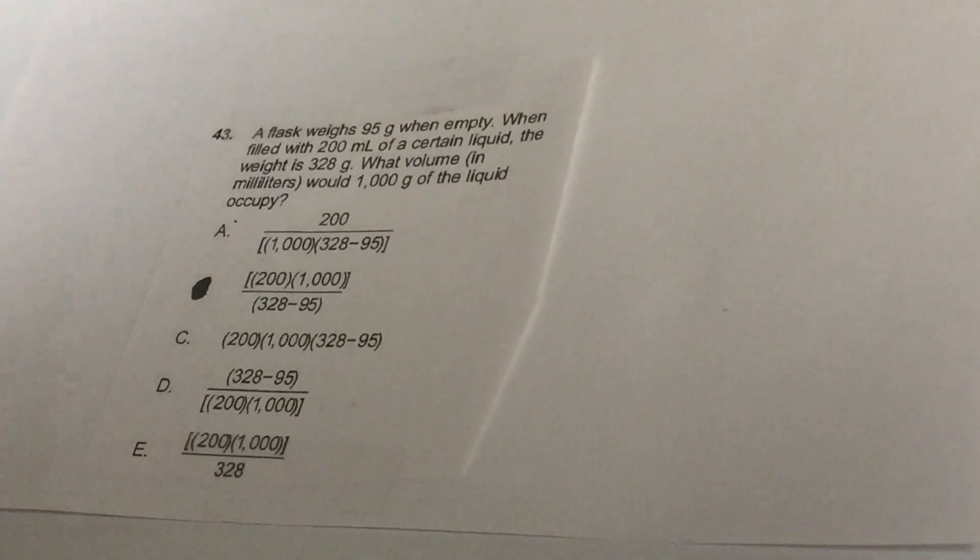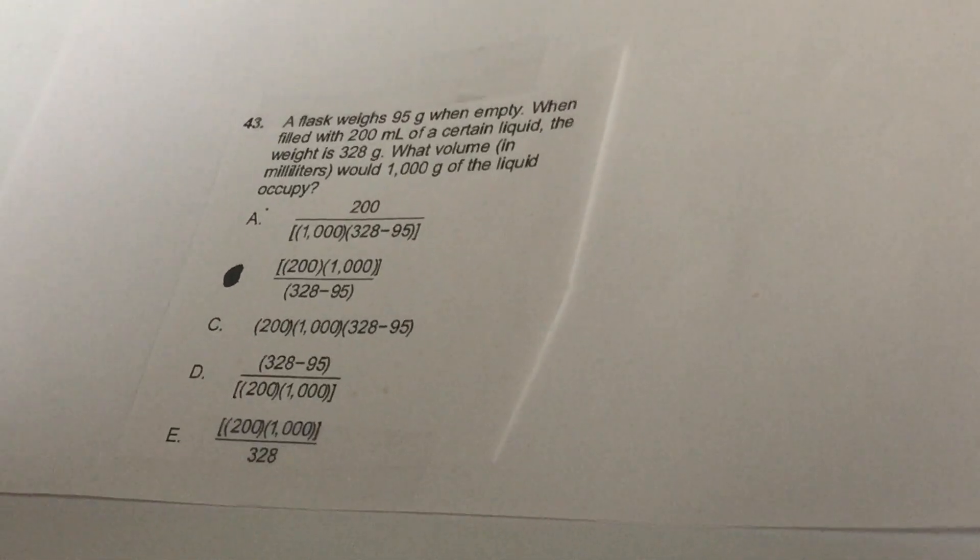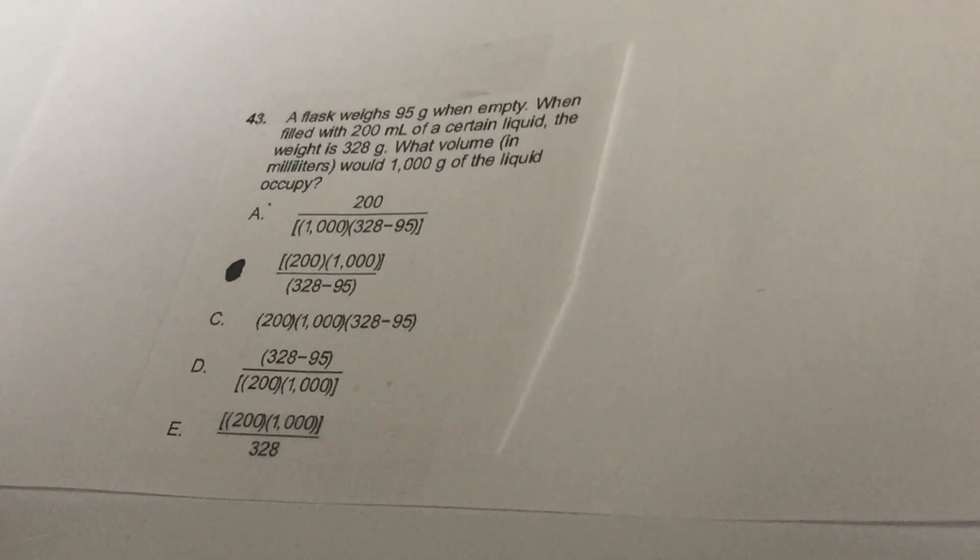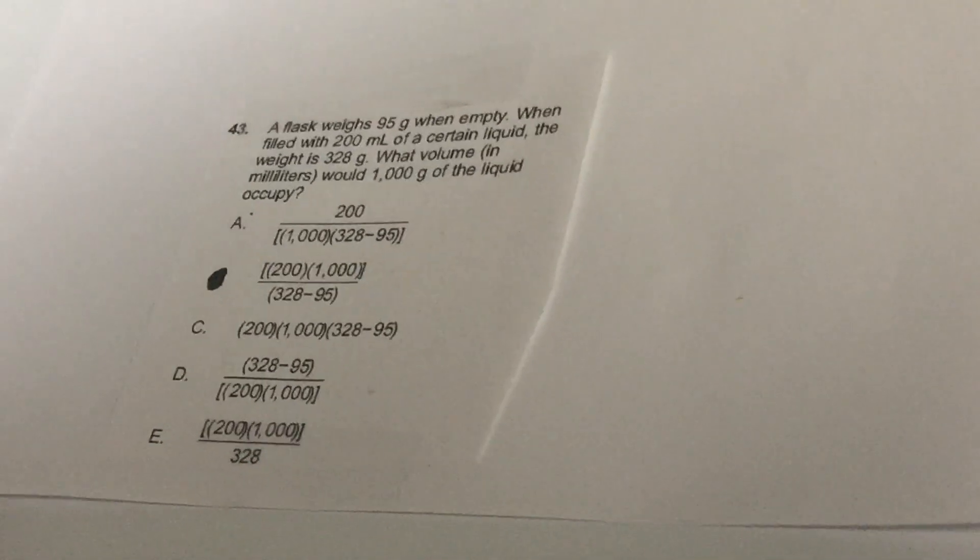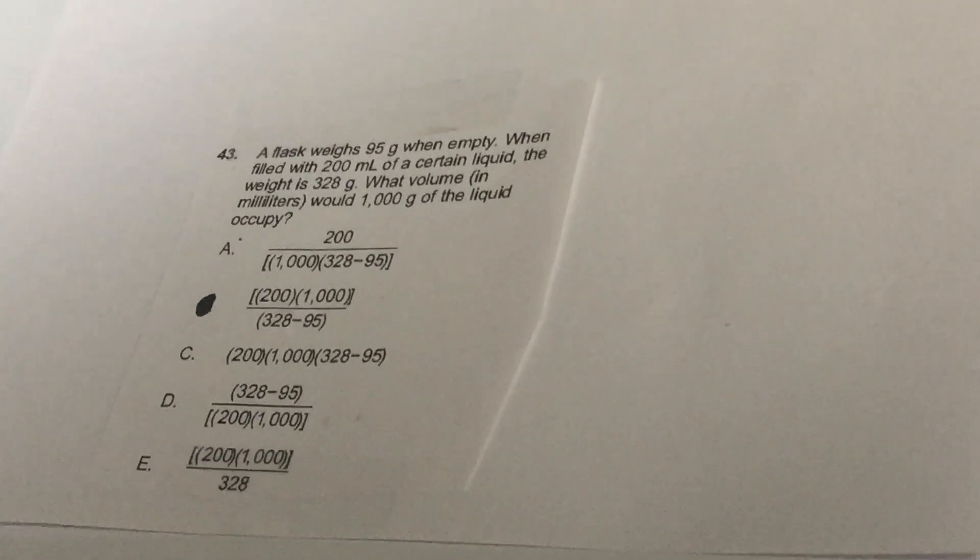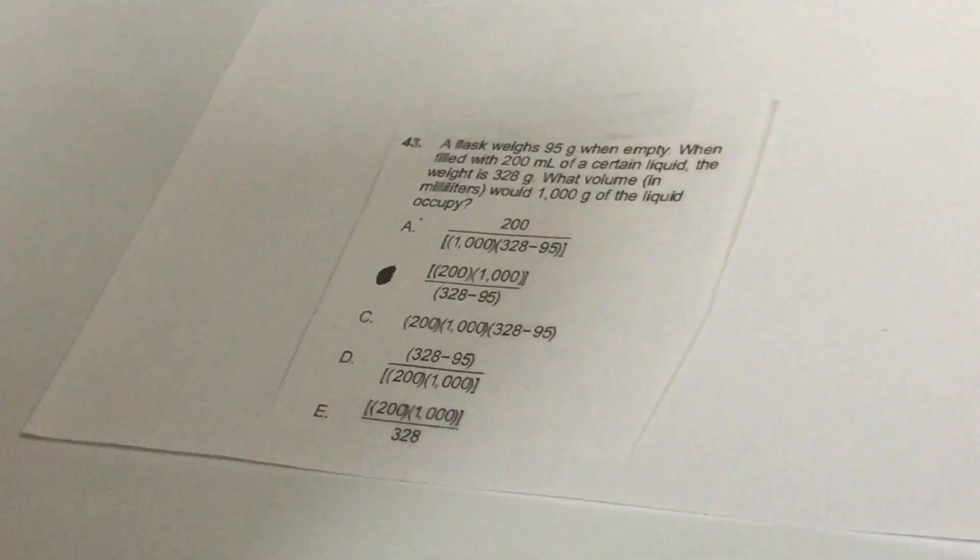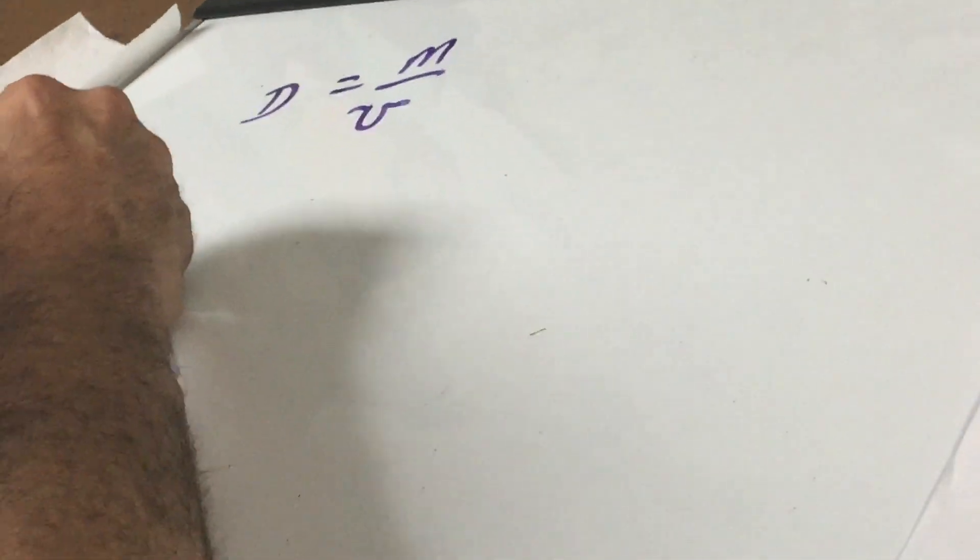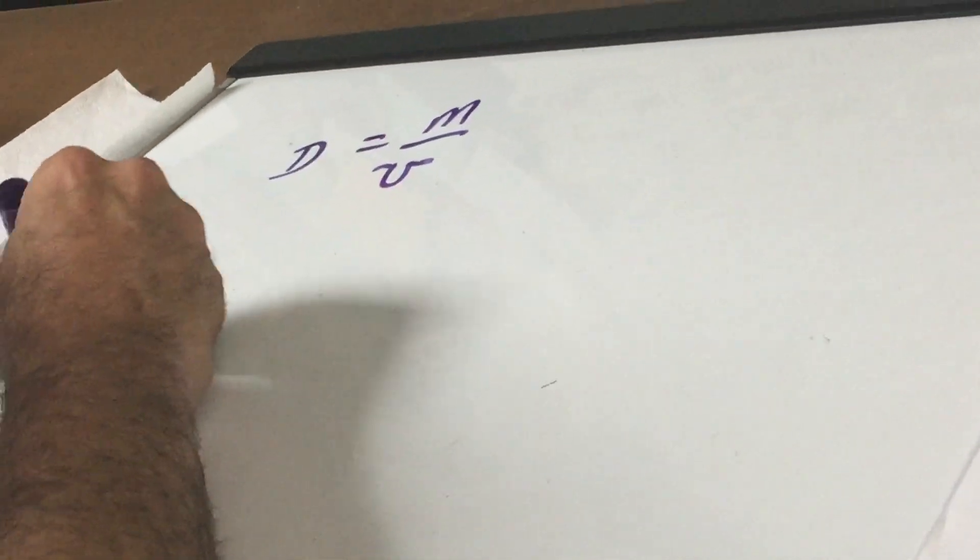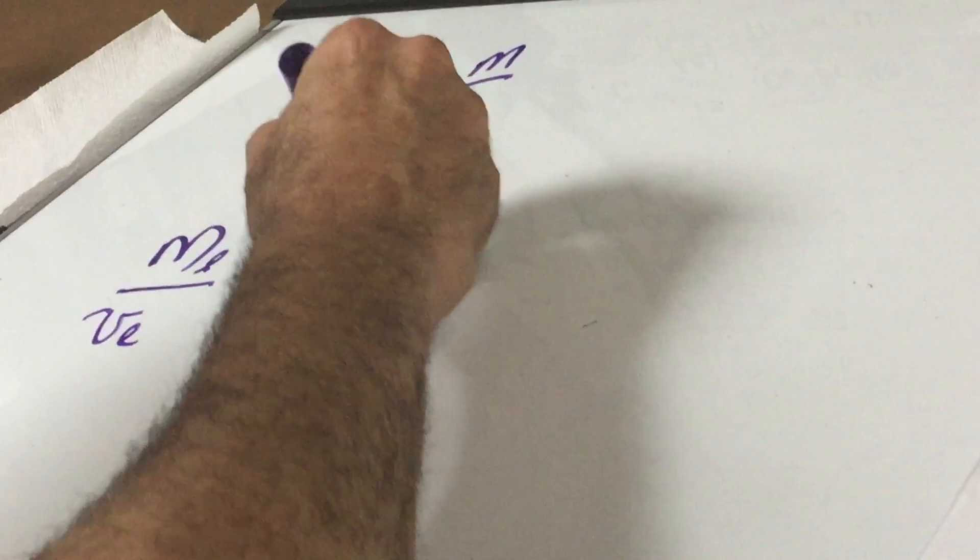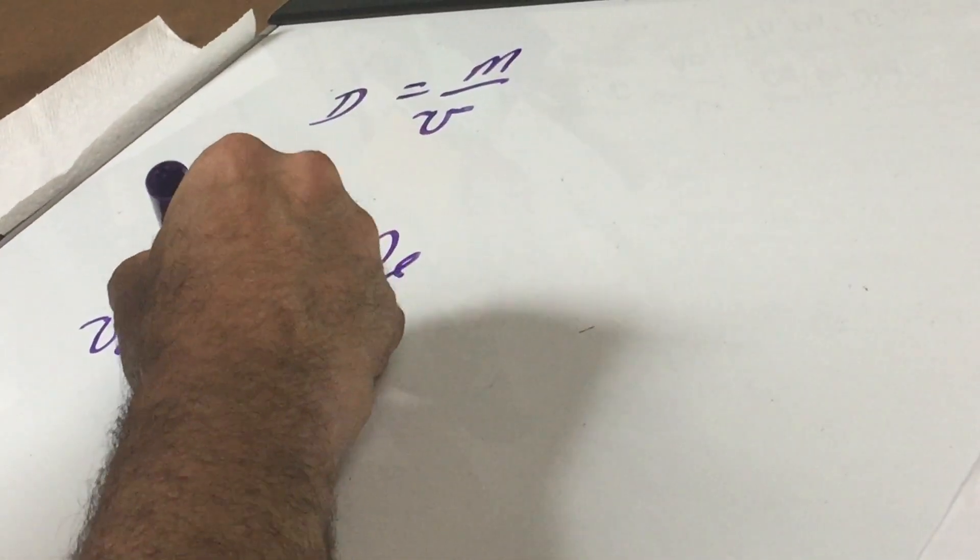Now the next question, it says that a flask weighs 95 grams when empty. When filled with 200 milliliters of a certain liquid, the weight is now 328. What volume in milliliters would a thousand grams of the liquid occupy? Now here's the best way to do it. We know density of the liquid is mass over the volume. And all we're doing is we're changing the amount of grams and volume. So what I can do is set up a ratio.